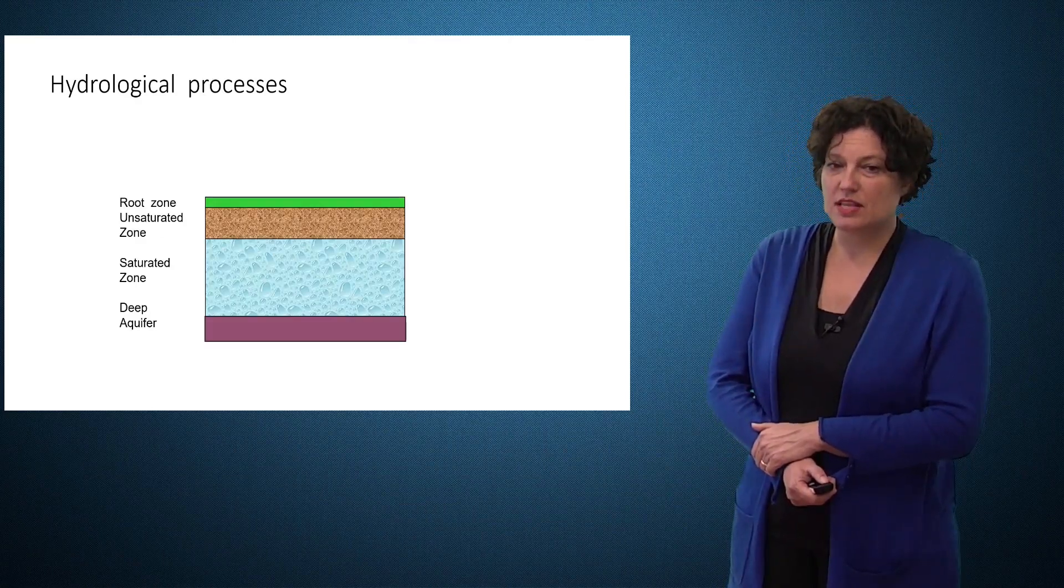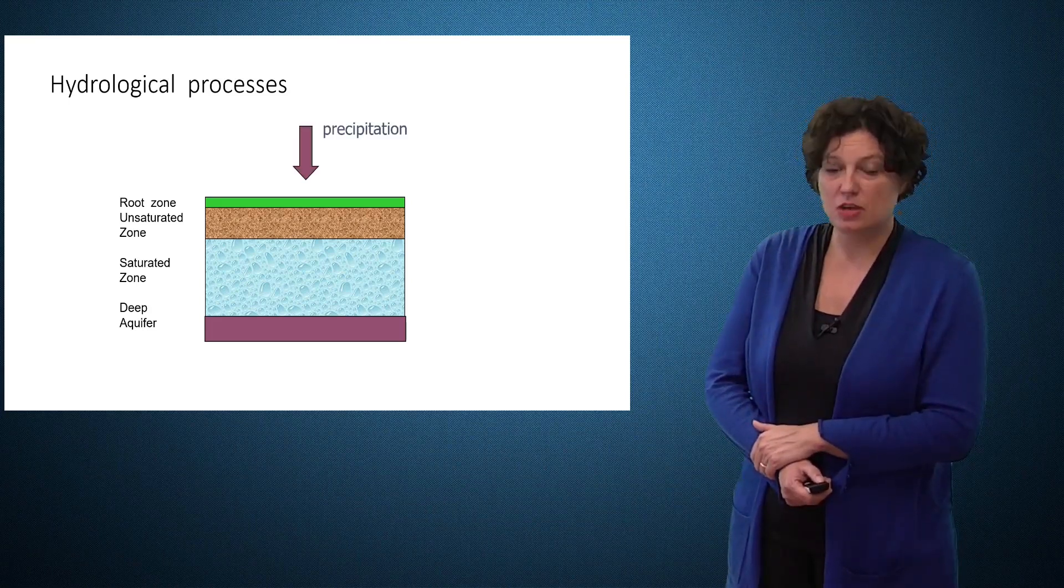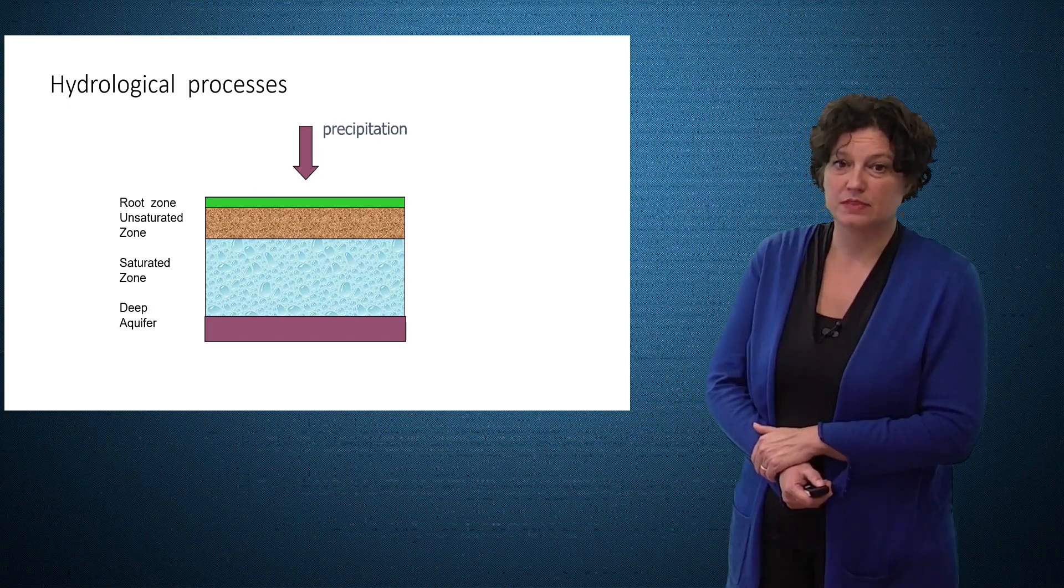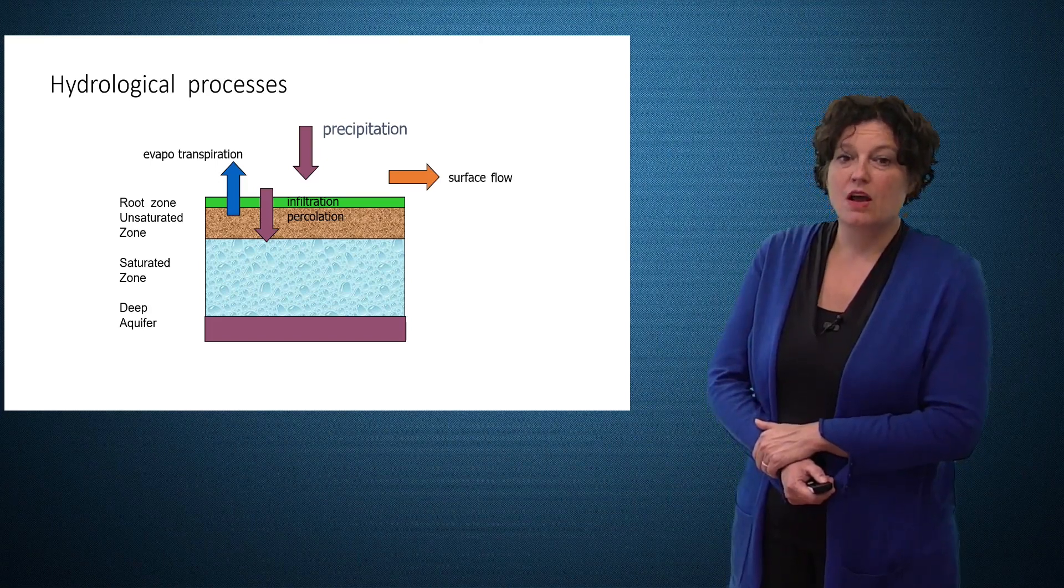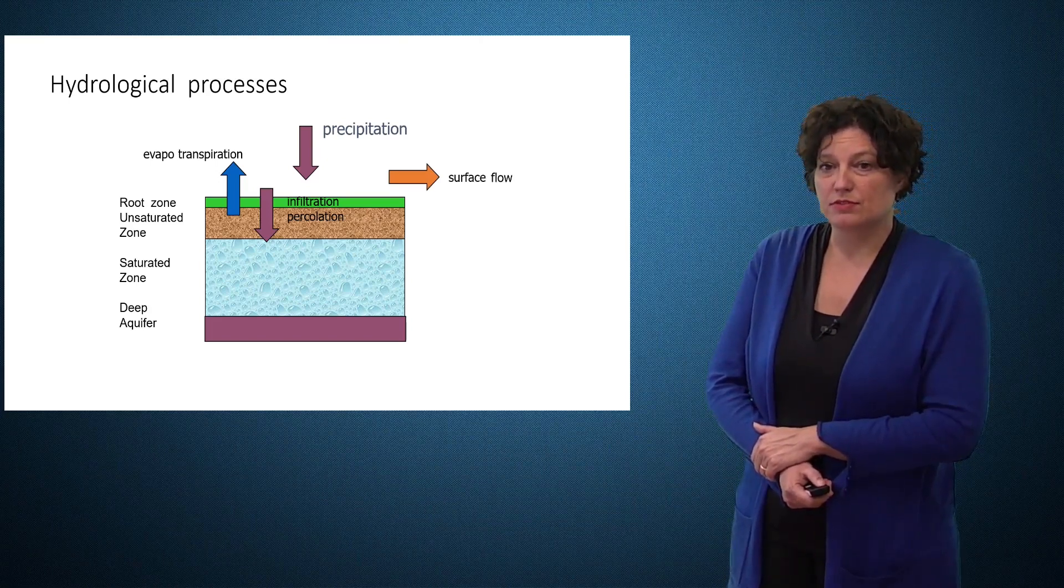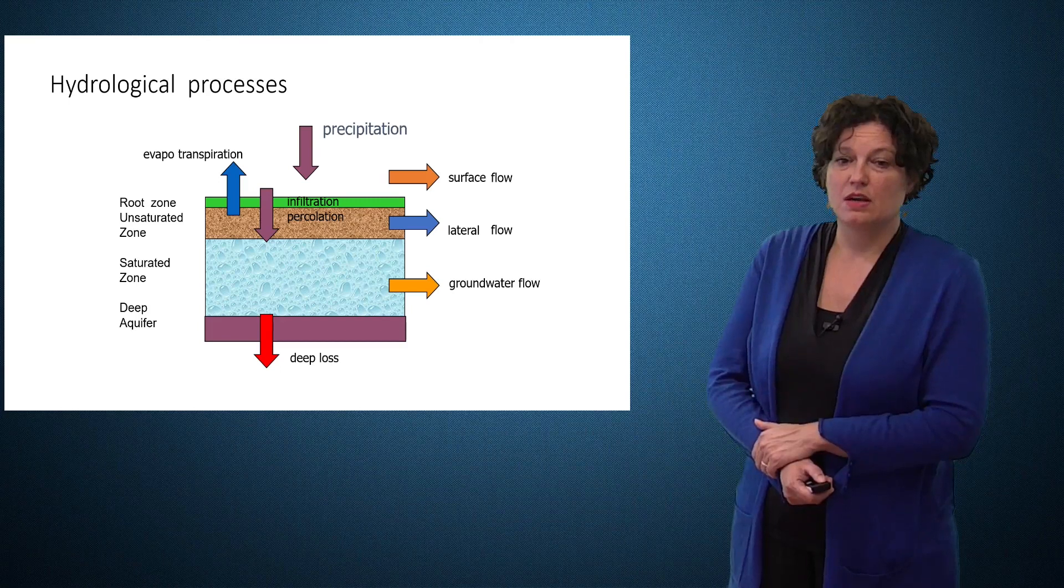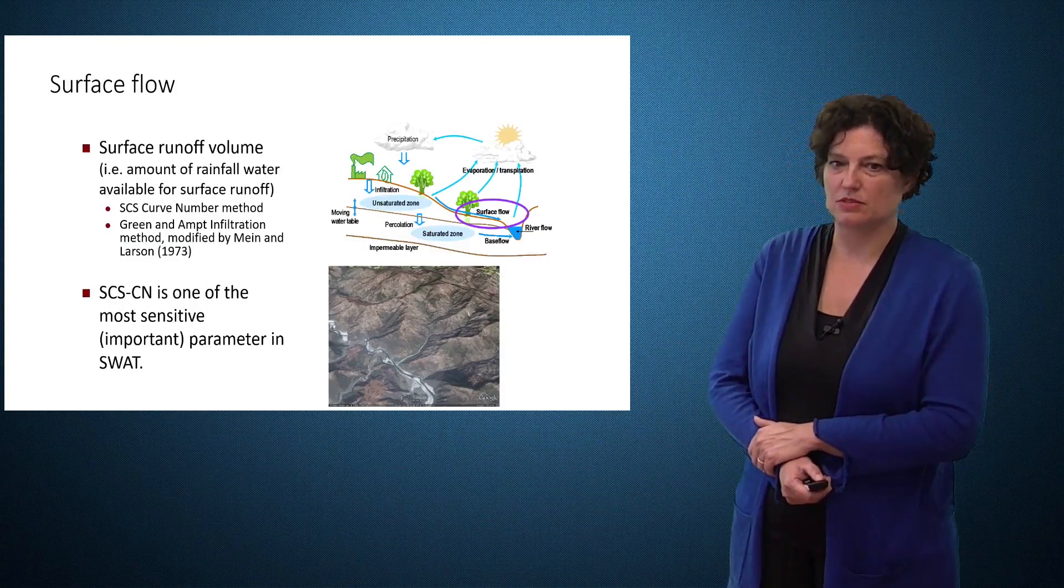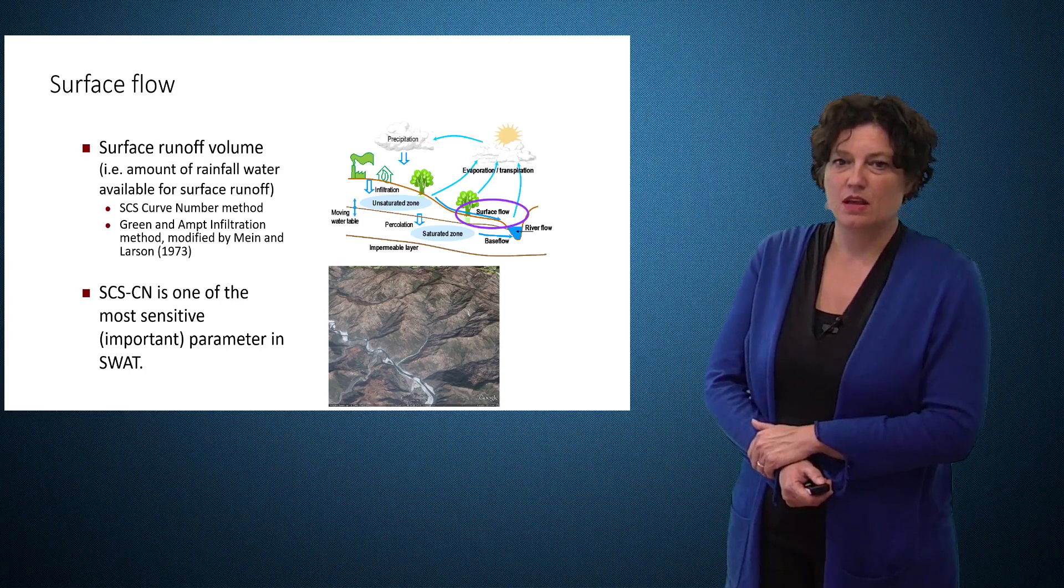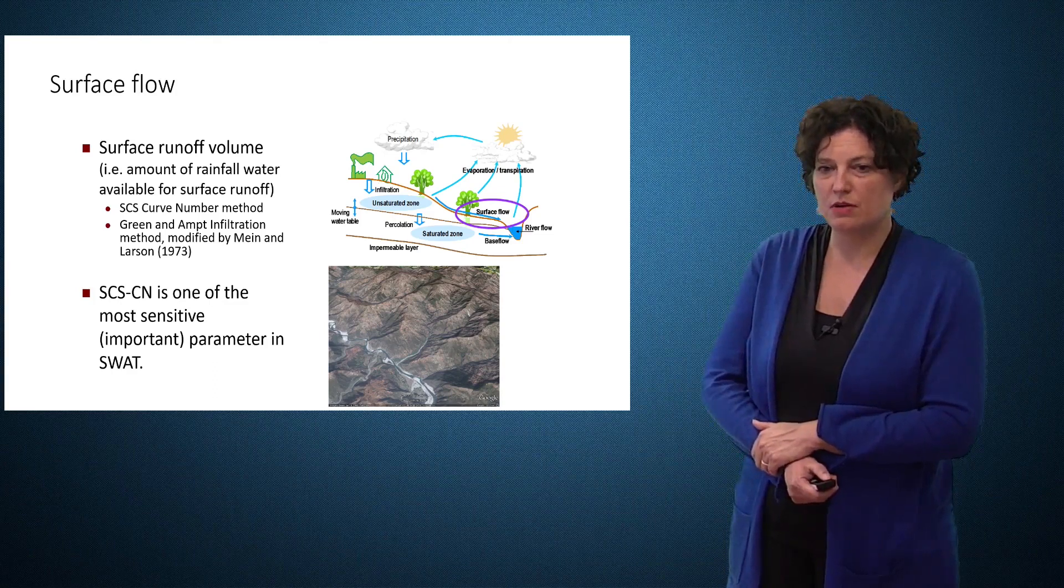The hydrology processes happen within the profile of the soil. On top of the soil you may have precipitation. This infiltrates and percolates through the soil. You may have evapotranspiration losses. Out of this you may get some surface flow, lateral flow and ground water flow. You may have percolation through the soil which is then further going to deep losses.